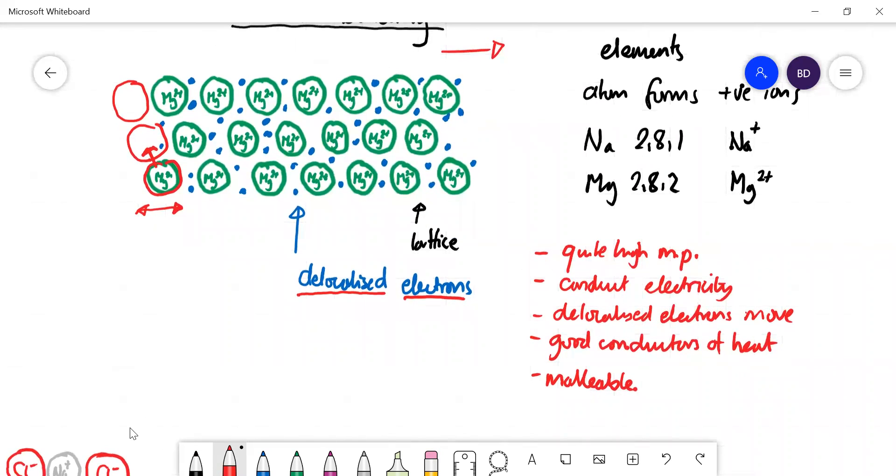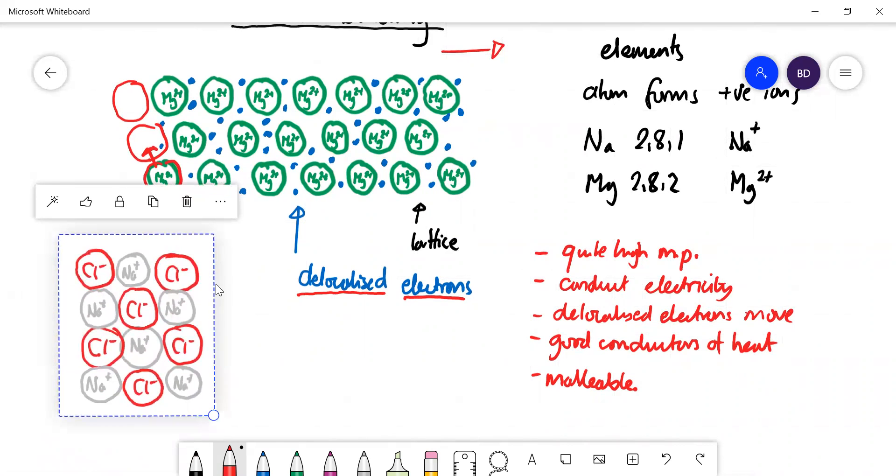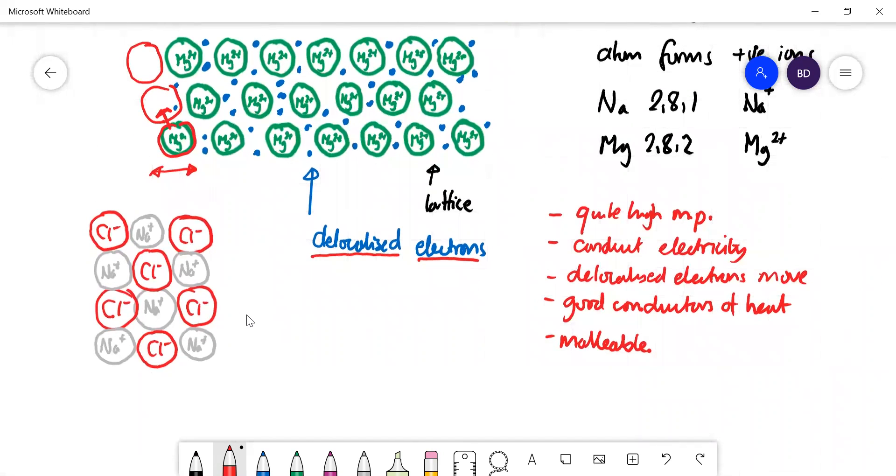Okay, so sodium chloride—that is not malleable, it's very brittle. This of course isn't a metal, it's an ionic compound, it's an ionic lattice.